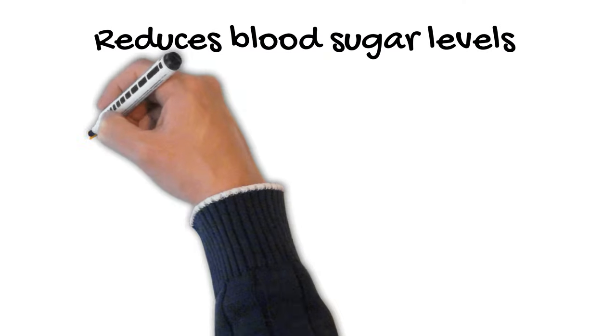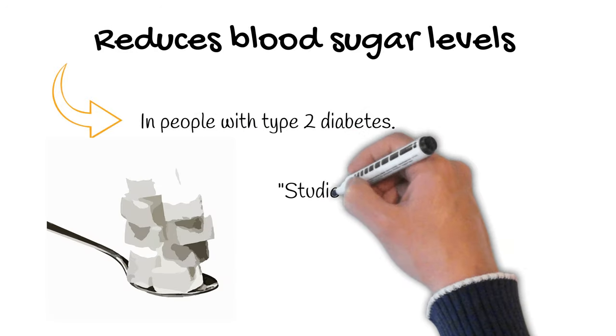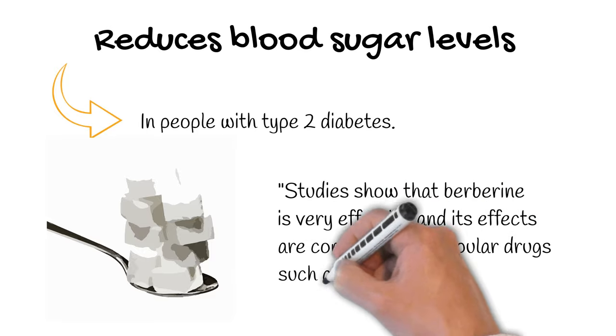For example, berberine can reduce blood sugar in people with type 2 diabetes. Many studies show that berberine is very effective and its effects are comparable to popular drugs such as metformin.